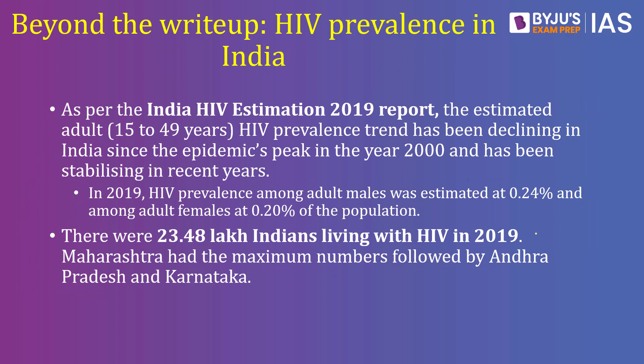In India, the HIV Estimation 2019 report by the government shows that India registered the highest number of HIV cases in the year 2000, and since then it has been declining. In 2019, HIV prevalence in adult males was about 0.24%, while for adult females it was about 0.2%. There are close to 23.5 lakh Indians living with HIV as of 2019, with Maharashtra being at the top of this unfortunate list.